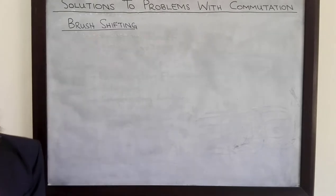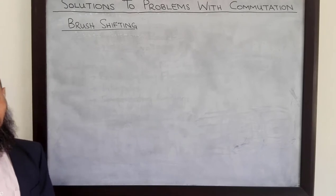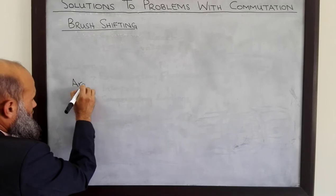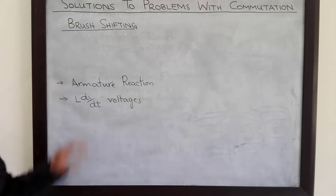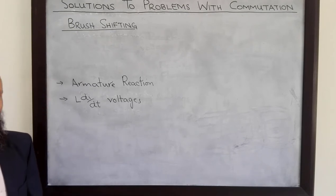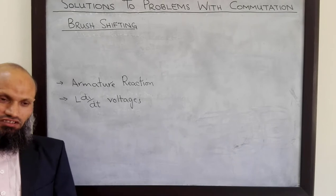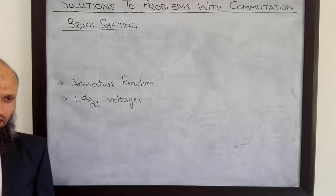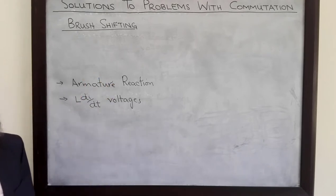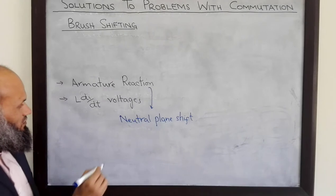In order to discuss these possible solutions, let's first revisit our understanding of the two problems: armature reaction and LDI by DT effect. We know that due to current in the coils of the rotor, there is a magnetic field around the coils themselves. That magnetic field interacts with the magnetic field of the main poles and distorts it. That distortion in the MMF is called armature reaction, and it has two consequences: neutral plane shift and flux weakening.